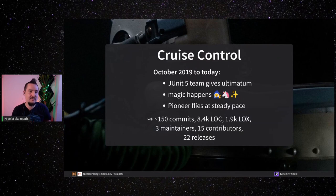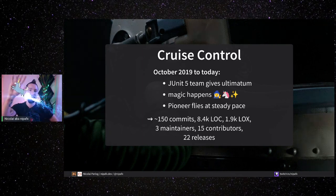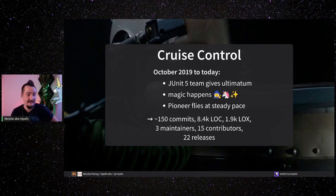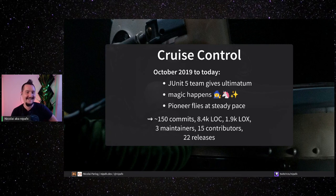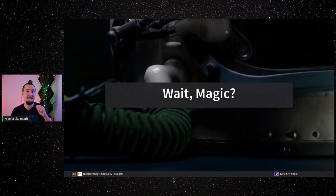Since October 2019, the JUnit 5 team said: 'Nikolai, we need a project for these small-ish extensions that we ourselves don't know where to put. Could you please finally do the thing, or we will have to start our own?' So I said okay, great — this time I promise I'm going to do it. And since then, Pioneer flies at a steady pace. We have 150 commits, merged pull requests that had been open for a long time, gained most of the code base since then, plus a lot of documentation. We now have three maintainers, 15 total contributors, and 22 releases.